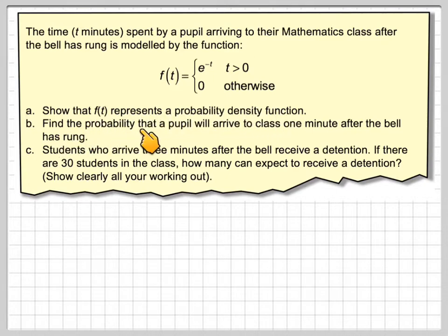Show that f of t represents a probability density function. Part b: Find the probability that a pupil will arrive late to class one minute after the bell has rung. Part c: Students who arrive three minutes after the bell receive a detention. If there are 30 students in the class, how many can expect to receive a detention? Show clearly all working.